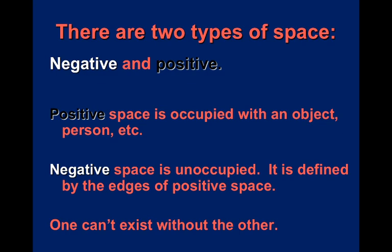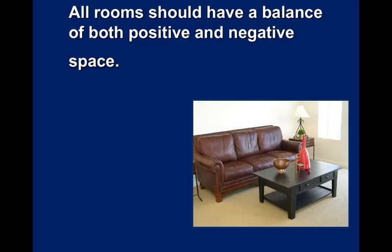Positive space is anything that's being occupied with an object or a person — you are positive space, what you're sitting on is positive space, what you're watching this through is positive space. Then there's negative space — this is unoccupied space, defined by the edges of positive space. That emptiness around your body is negative space; the emptiness around your laptop is negative space. One cannot exist without the other — they are so crucial. All rooms have this balance of positive and negative space, and it's important to get a good ratio.